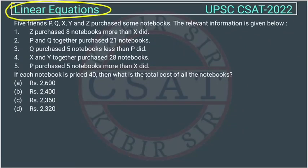This is a question of linear equations asked by UPSC in CSET exam of 2022. Five friends P, Q, X, Y and Z purchased some notebooks. The relevant information is given below. Z purchased 8 notebooks more than X did.